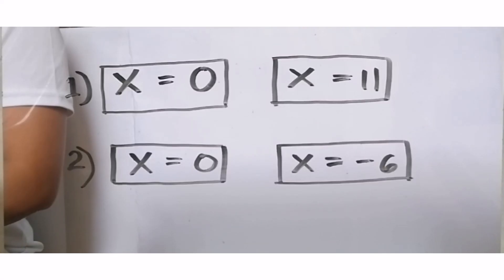Ang mga sagot. Number 1, x = 0 at x = 11. Number 2, x = 0 at x = -6. Nakuha mo ba? Hanggang sa muli!